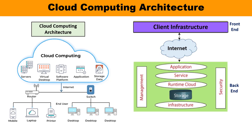You can see this is the detailed architecture. In this architecture, you can observe that the cloud architecture is divided into two parts: one is the front end and the other is the back end. The Cloud Computing Architecture is a combination of service-oriented architecture and event-driven architecture.